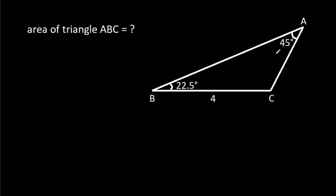In this video, we have been given that angle ABC is 22.5 degrees, angle BAC is 45 degrees, and BC is 4. We have to find the area of triangle ABC.